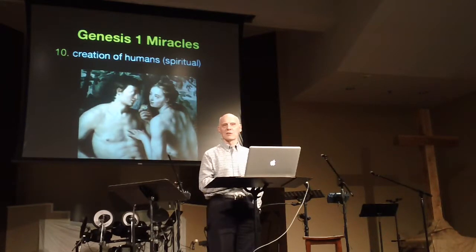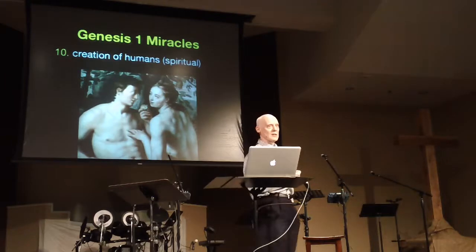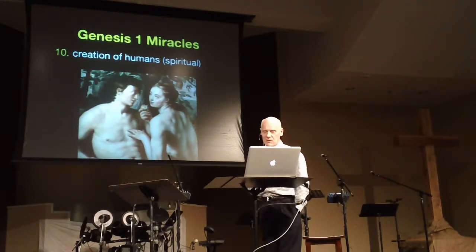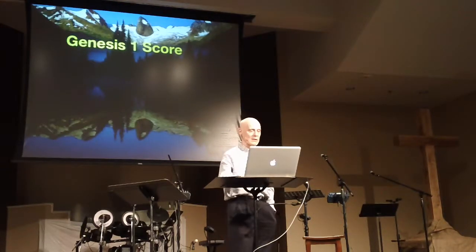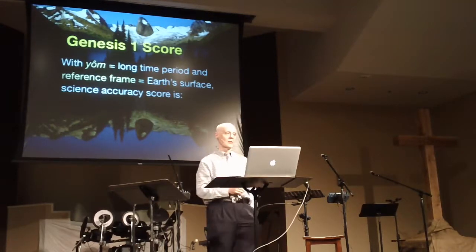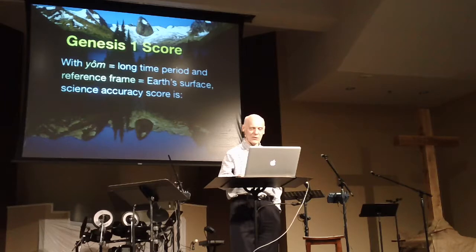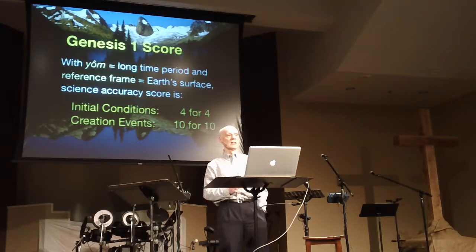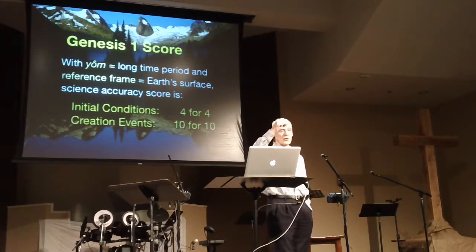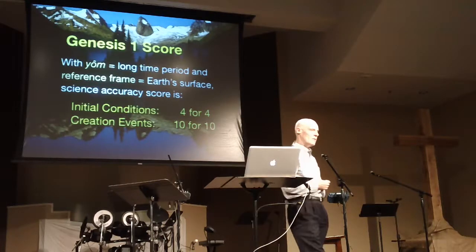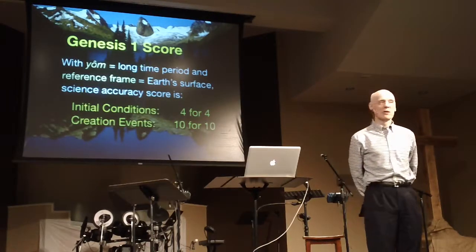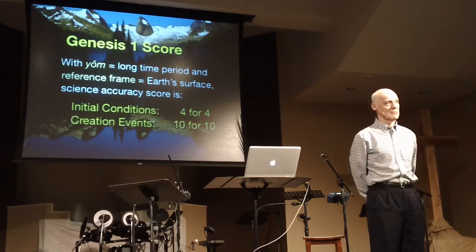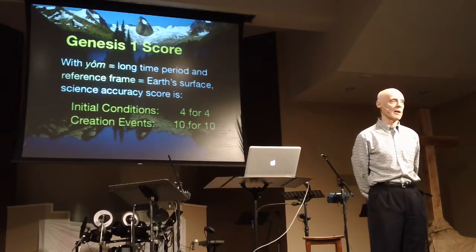Let me conclude with something I discovered at age 17. I spent four hours studying the first page of the Bible. At the end of that four-hour study, noting that the word 'yom' doesn't mean a short finite period of time, and that the frame of reference for the six days is the surface of the earth, I noted that Genesis 1 gets four for four correct on the initial conditions compared to the established record of nature, and ten for ten on both the description of the creation events and the order in which they're sequentially placed. Fourteen for fourteen. The best I found outside of the Bible was the Enuma Elish of the Babylonians, where it got two out of fourteen right. The rest of the creation texts outside of the Bible get a score of zero.